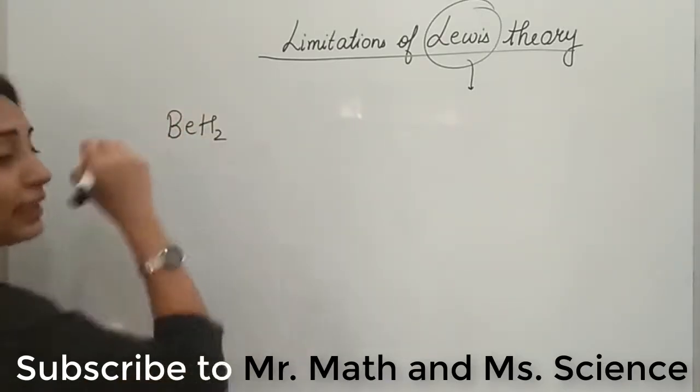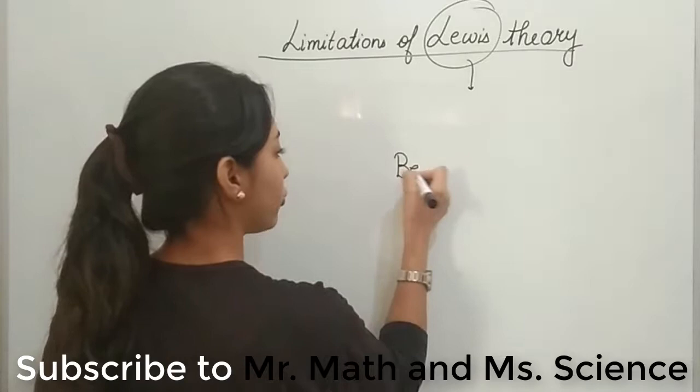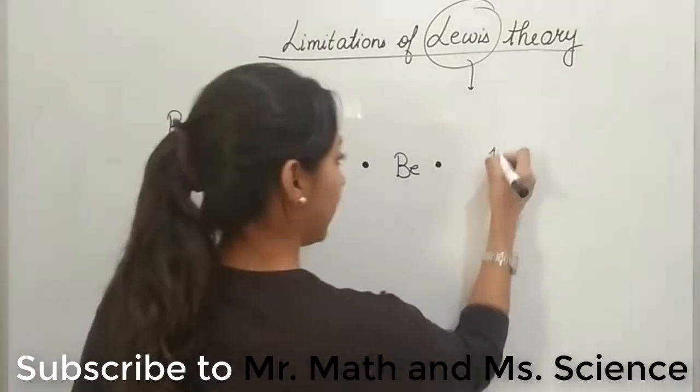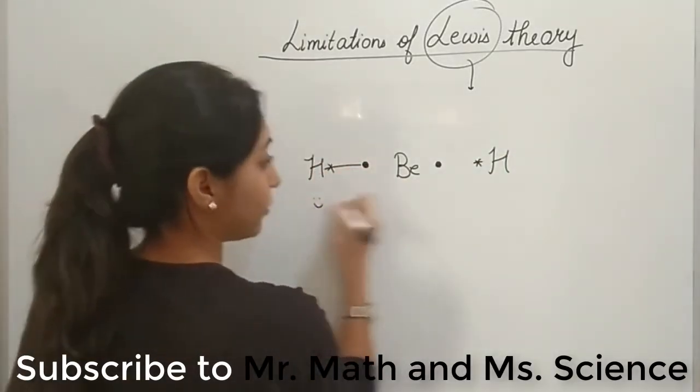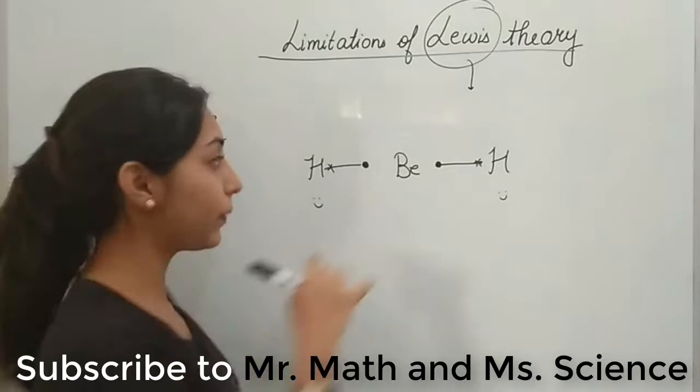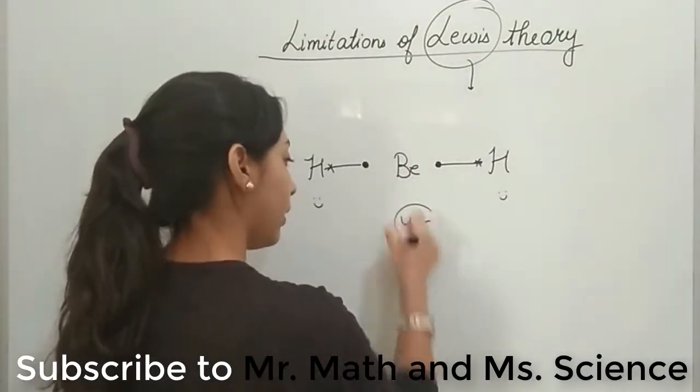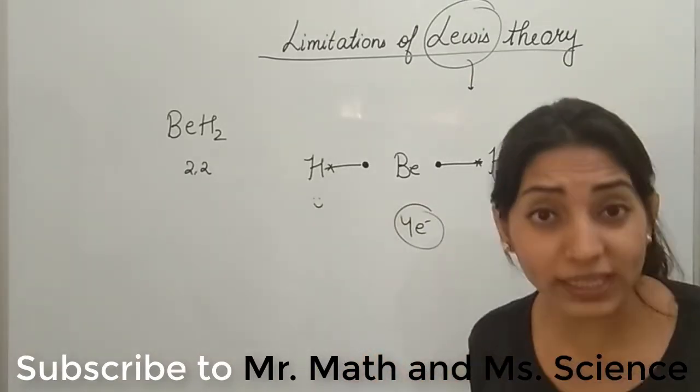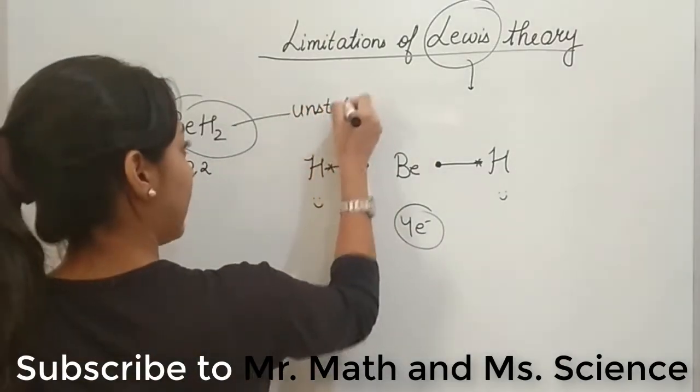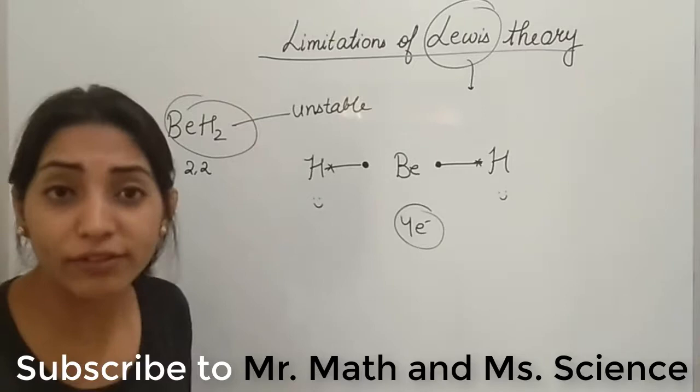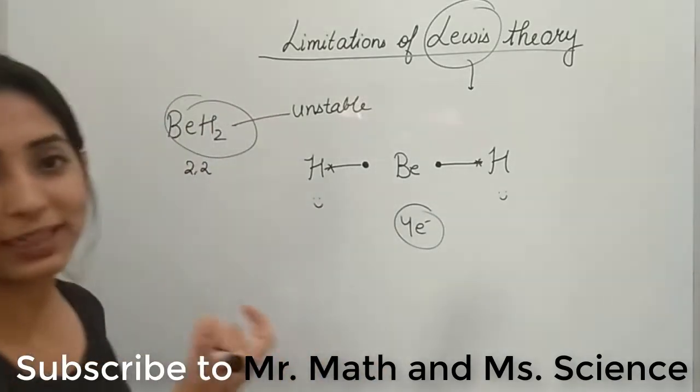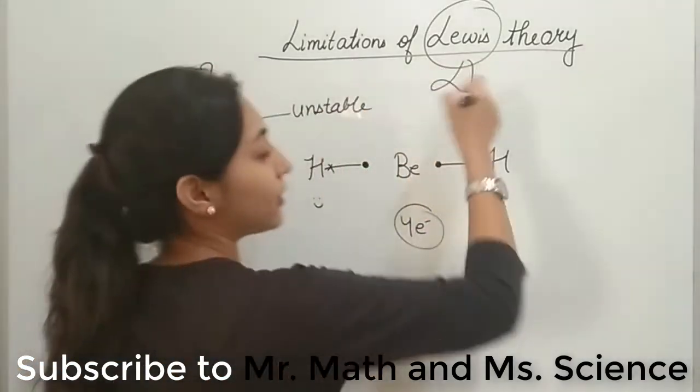First example, let us consider BeH2. If I ask you to draw the Lewis dot structure, beryllium is 2,2. So one, two. Two valence electrons, two hydrogens are coming. Hydrogens duplet complete, duplet complete. Let us count the number of electrons in the case of beryllium. One, two, three, four. Uh-oh. So beryllium is still having four electrons. That means according to Lewis, BeH2 should be an unstable molecule because beryllium is not having octet complete. But if you look at BeH2, it exists like anything. It is so happy as BeH2. Now why is it happy? Lewis couldn't explain us.